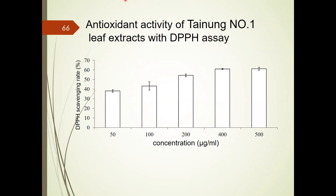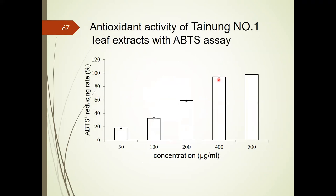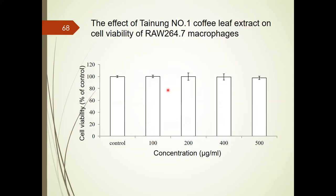We measured the anti-oxidant activity of Tainone No. 1 leaf extract with DPPH. The results indicate the coffee leaf extract dose-dependently increased the anti-oxidant activity. A similar anti-oxidant pattern was presented in the ABTS radical scavenging activity. We also measured the cytotoxicity of Tainone No. 1 coffee leaf extract in RAW 264.7 macrophages. The extract at concentrations of 100 and 500 micrograms per mL can maintain 90% cell viability.